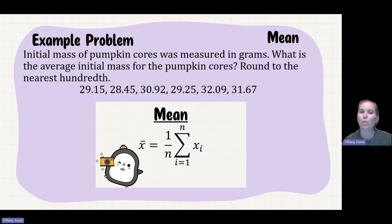I wanted to give you a moment that you could actually try this out yourself and see if you can solve this. If you want to pause the video, you could then solve this problem with mean. The initial mass of the pumpkin cores was measured in grams. What is the average initial mass for the pumpkin cores? Round to the nearest hundredth.